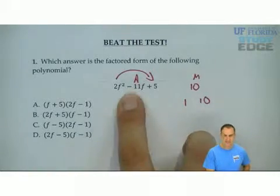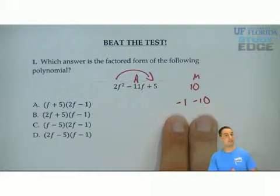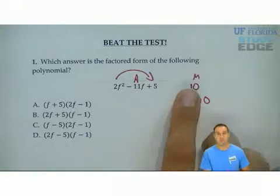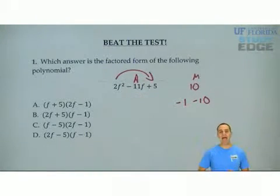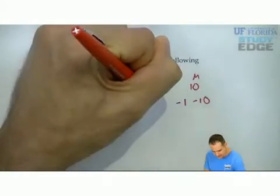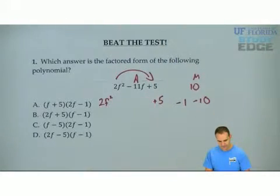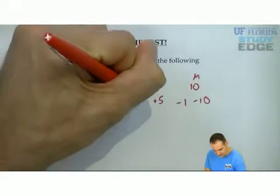But the signs to give you a negative would be a negative and a negative, because a negative 1 times negative 10 will multiply to give you a positive 10, and negative 1 plus negative 10 will add to negative 11. Bring down the outside terms. Negative 11 becomes negative 1f minus 10f.